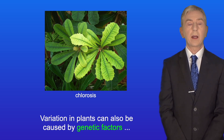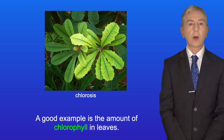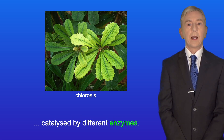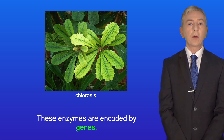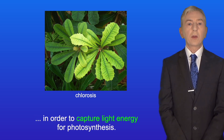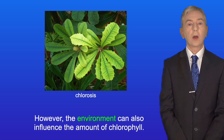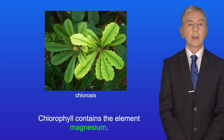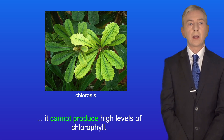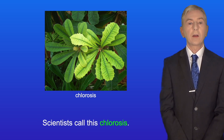Variation in plants can also be caused by genetic factors and environmental factors. A good example is the amount of chlorophyll in leaves. Chlorophyll is produced in a series of reactions catalyzed by different enzymes, and these enzymes are encoded by genes. Usually plants produce high levels of chlorophyll in order to capture light energy for photosynthesis. However, the environment can also influence the amount of chlorophyll. Chlorophyll contains the element magnesium, so if a plant is deficient in magnesium, it cannot produce high levels of chlorophyll. In this case, the leaves appear light green, and scientists call this chlorosis.